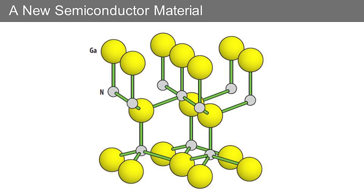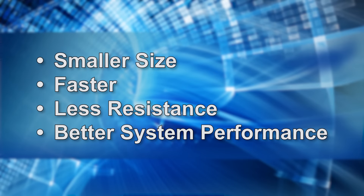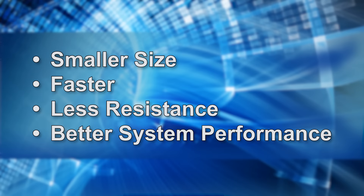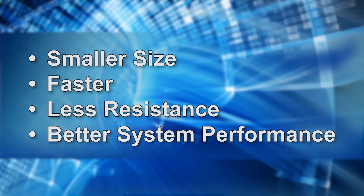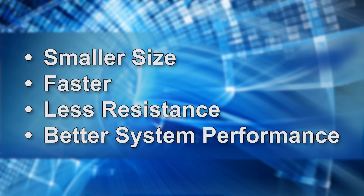Gallium nitride is a crystal and it's made out of gallium and nitrogen as you might guess. And the good news is it's actually a better semiconductor than silicon. The gallium and nitrogen bond is stronger, and as such it allows you to make devices that are a whole lot smaller than silicon with the same functionality. When you shrink the size of the semiconductor you can also make things go faster. The device operates faster, it has less resistance, and overall you get better system performance.